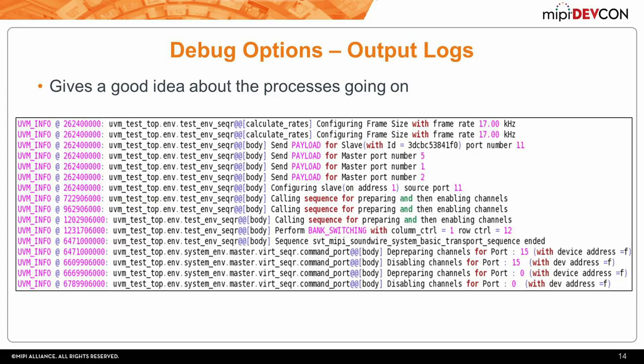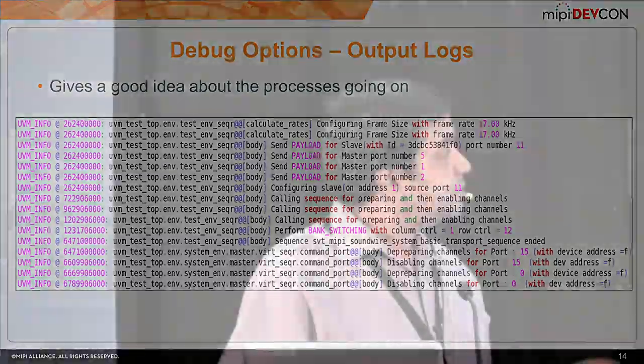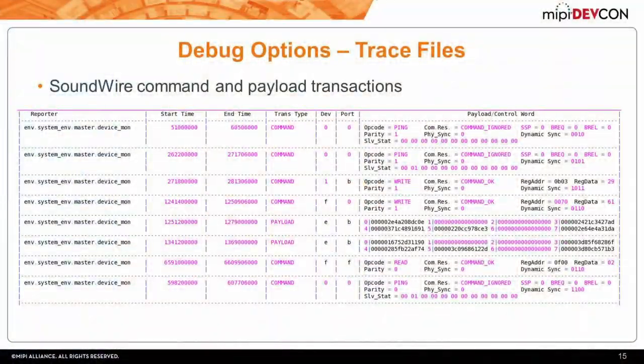This is the log file—the first thing you see when you run any test case. It gives you a fair amount of information about what's going on: configuration activity, which port of which master or slave is sending payload, and whether bank switching is occurring. This gives you a general idea of what's happening overall in the system, but it's not sufficient for detailed debugging.